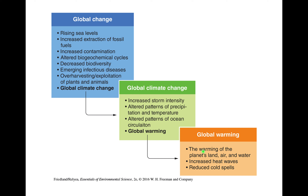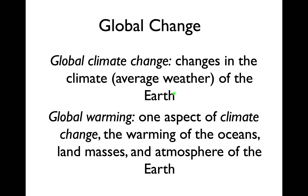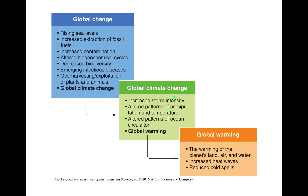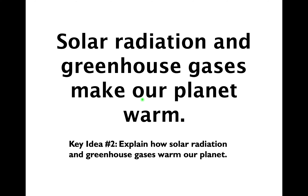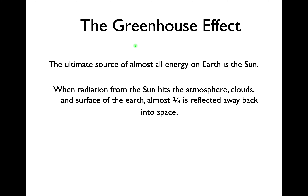From our textbook: global change includes increased contamination, emerging infectious diseases, and rising sea levels — very broad. One of those global changes is global climate change, which covers storm intensity, ocean circulation patterns, altered precipitation, and temperatures. Finally, global warming is part of climate change and refers specifically to the warming of the planet's land, air, and water, giving us more drastic seasons — reduced cold spells and increased heat waves.